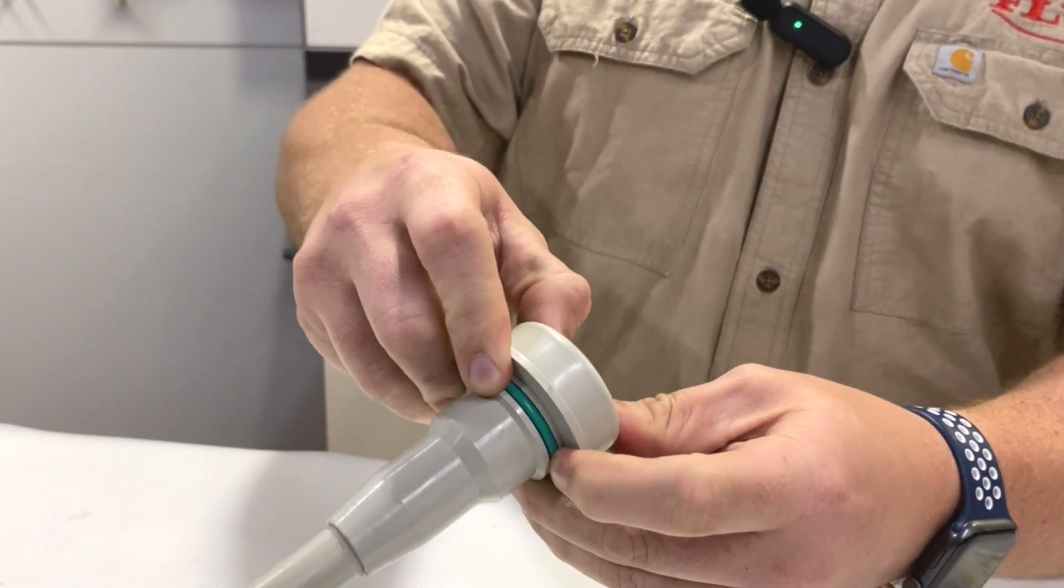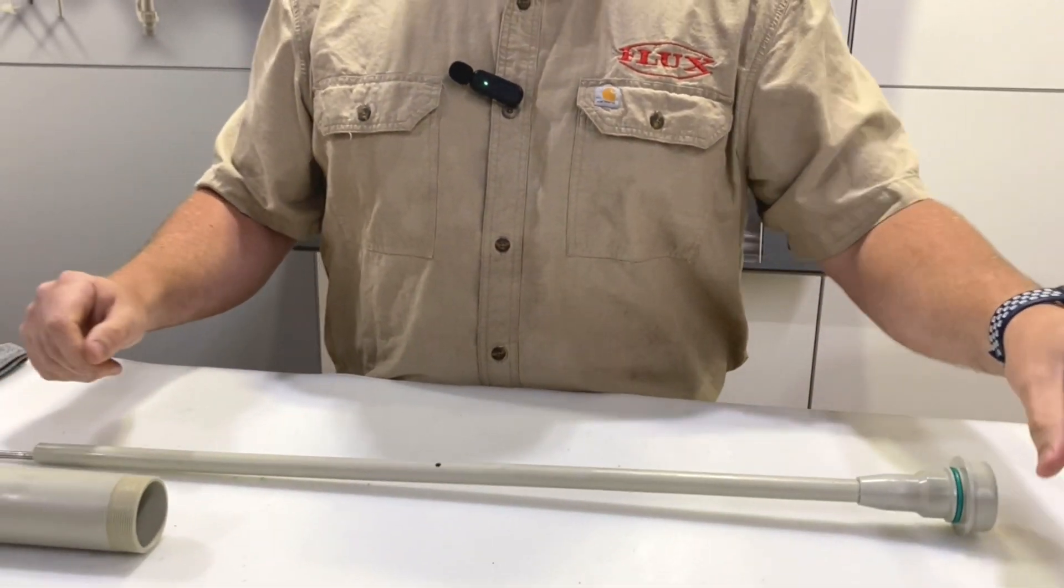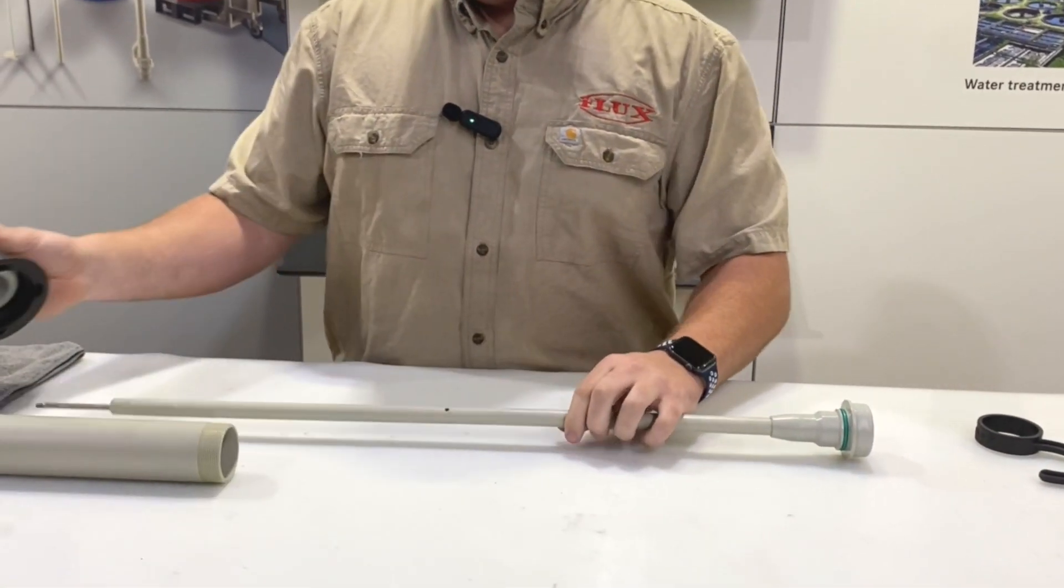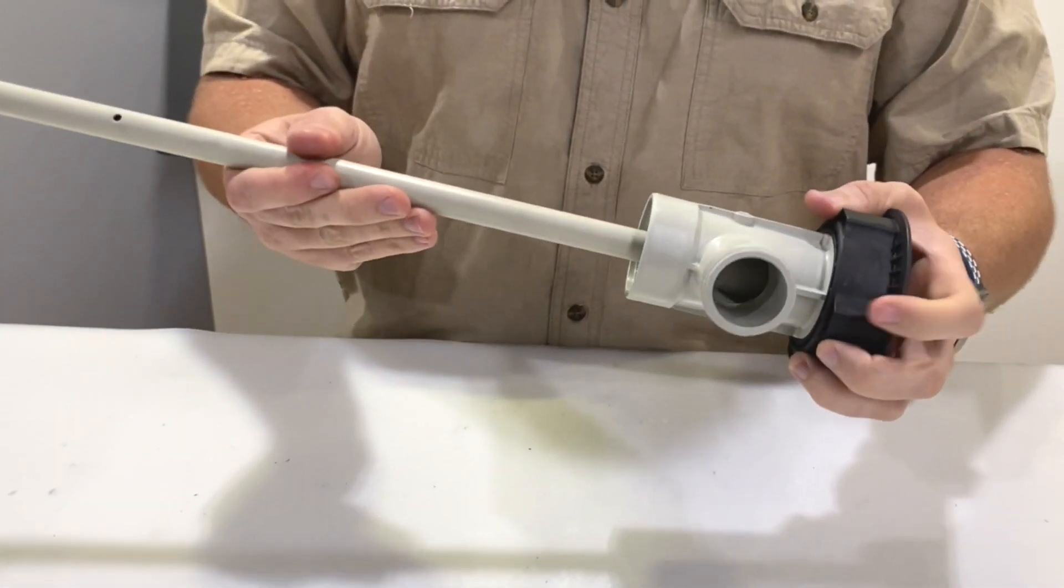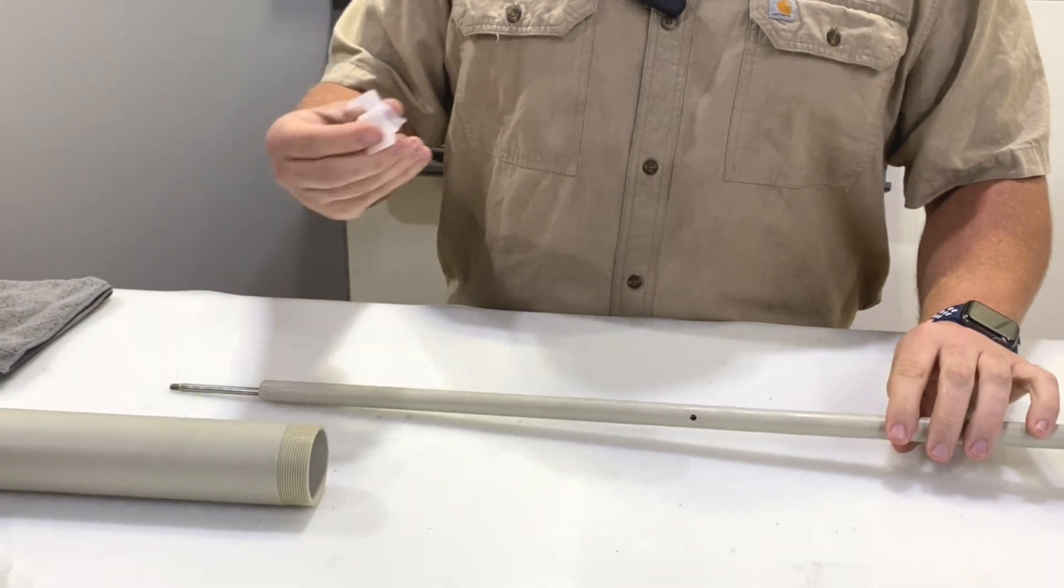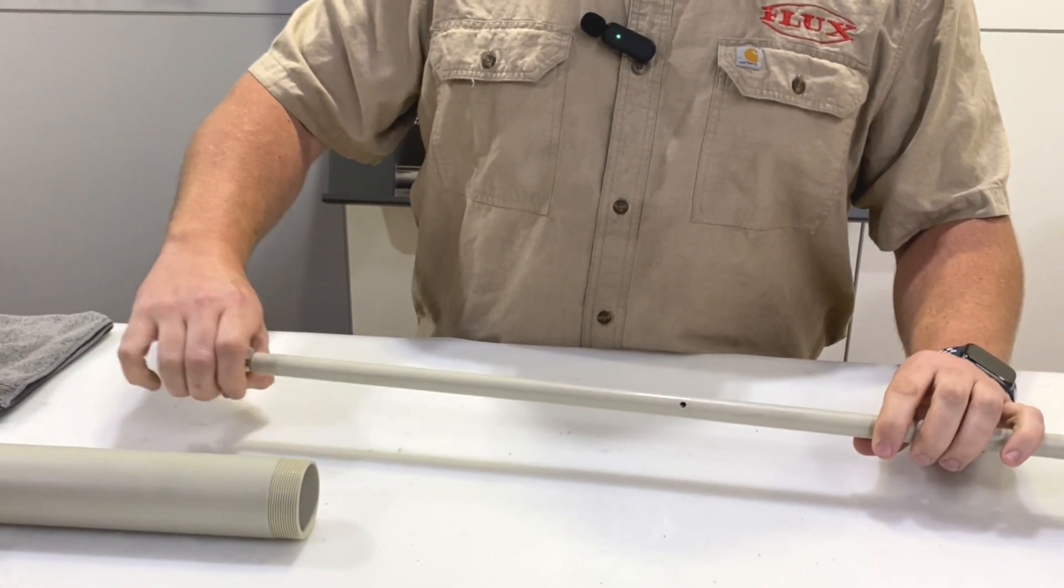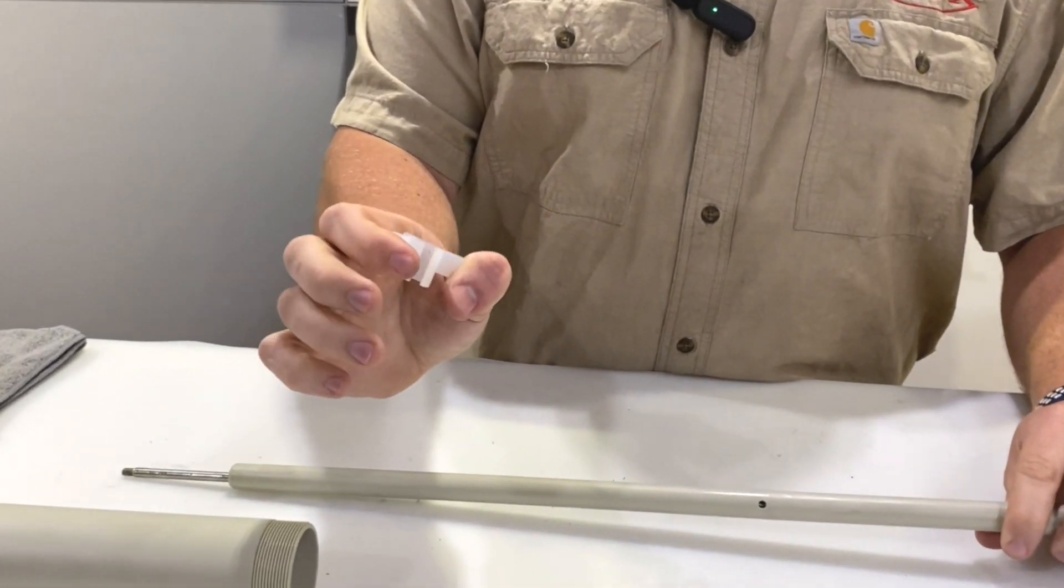And then put the centering star back over the shaft. You can see the slot here, just kind of pull that apart and that'll allow you to get it on and clip into place.